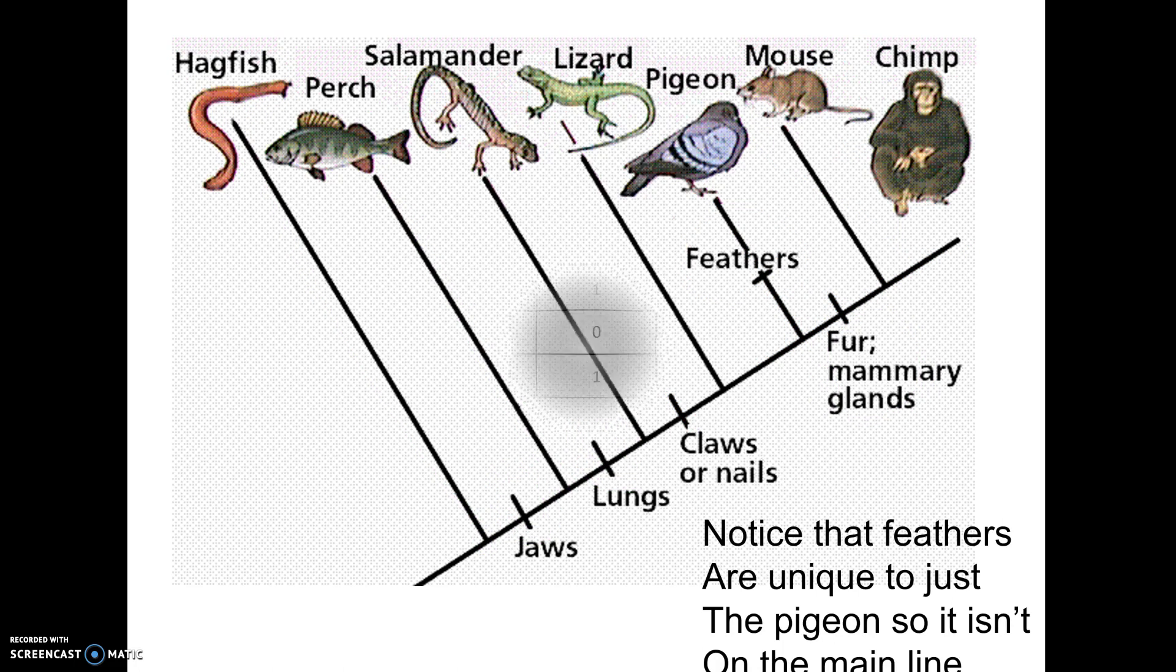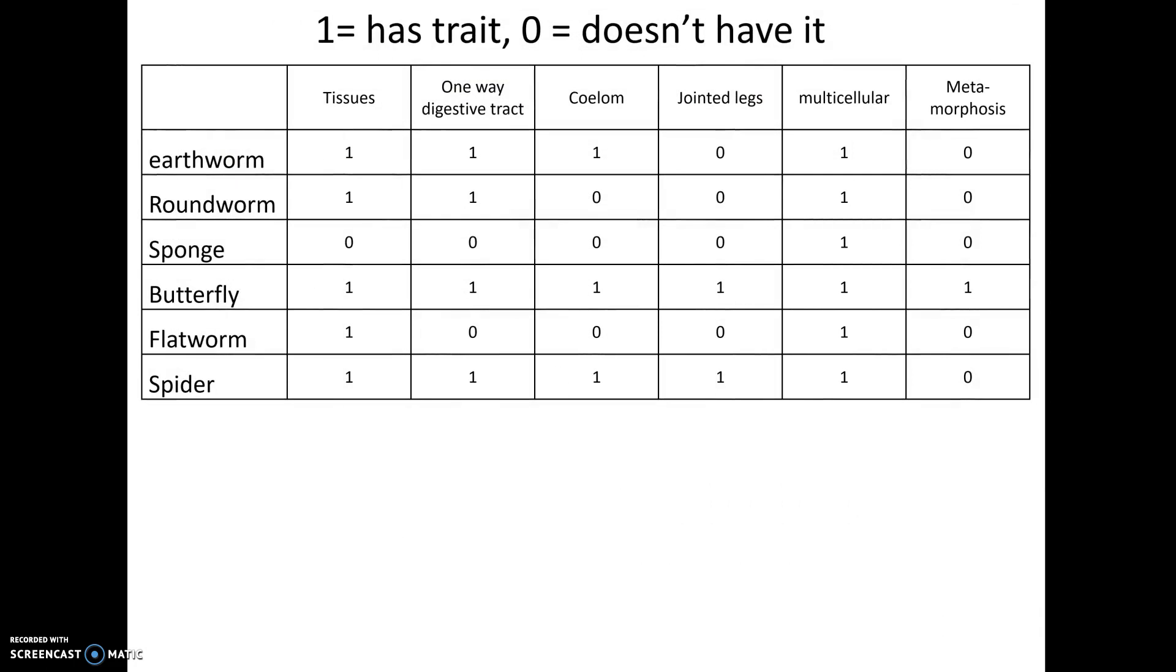So let me show you how to make one of these. So here's one. Everybody that has the trait has a one. And whoever doesn't have the trait has a zero. So always, your first step, and you can't do anything if you don't know how to start. Your first step is that you're either looking for a primitive character, meaning a trait that everybody has, so a trait with all ones. Or you are looking for an outgroup, an organism that has all zeros. And you can't have both of these things. You're either going to have a trait that everybody shares or an organism that has no traits.